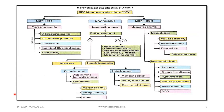The morphological classification of anemia is based on mean corpuscular volume (MCV). If MCV is less than 80, it is microcytic anemia — causes include sideroblastic anemia, iron deficiency anemia, thalassemia, anemia of chronic disease, and lead toxicity. If MCV is between 80 and 100, it is normocytic anemia — we also need a reticulocyte count. If the reticulocyte count is normal to decreased, causes include aplastic anemia, chronic renal failure, anemia of chronic disease, Parvovirus B19 infection, and malignancy such as leukemia.